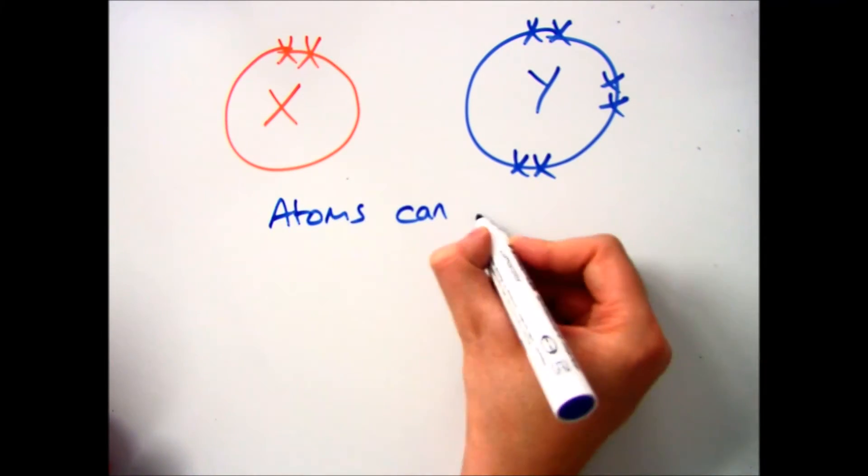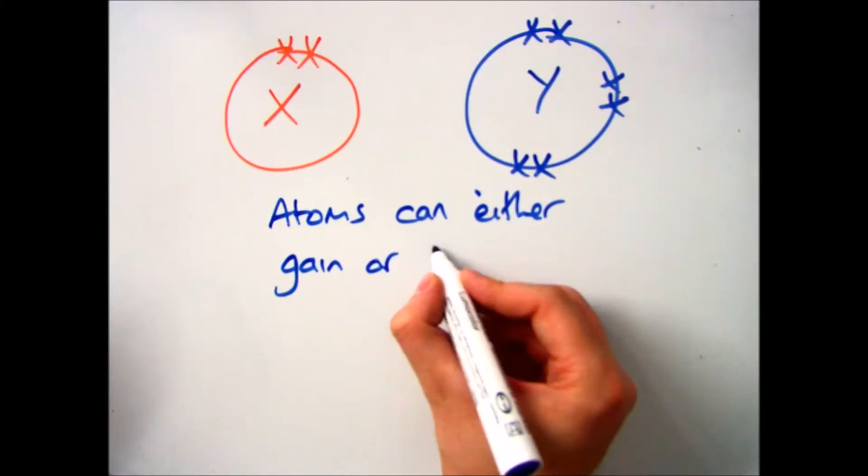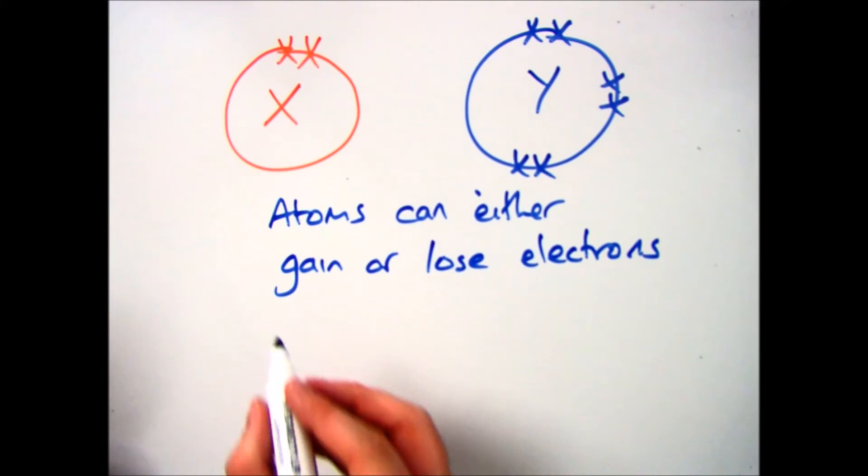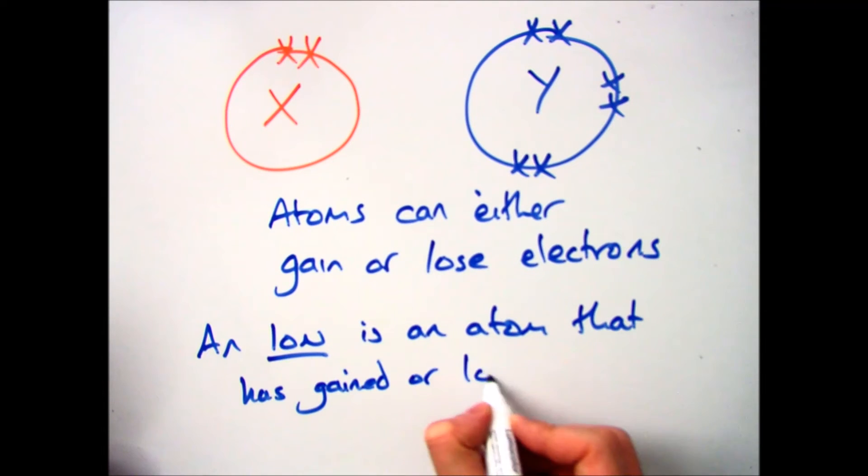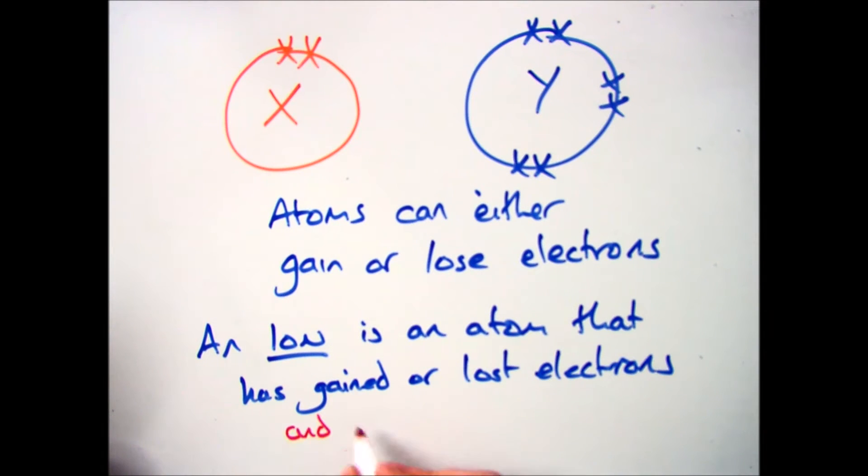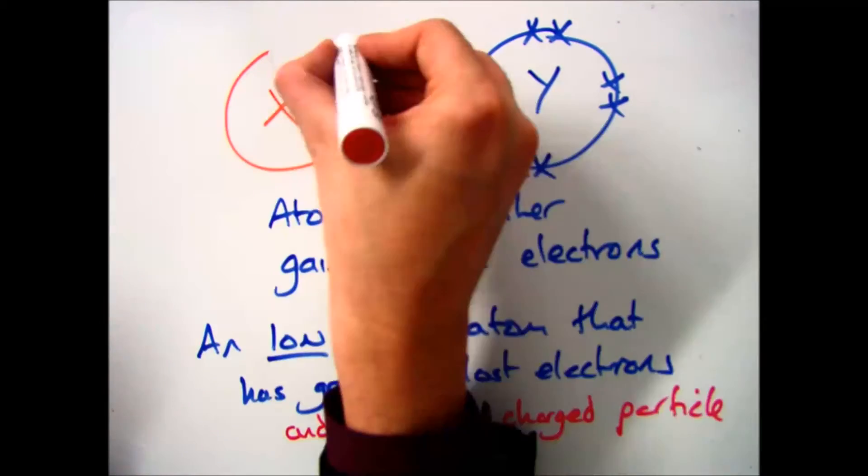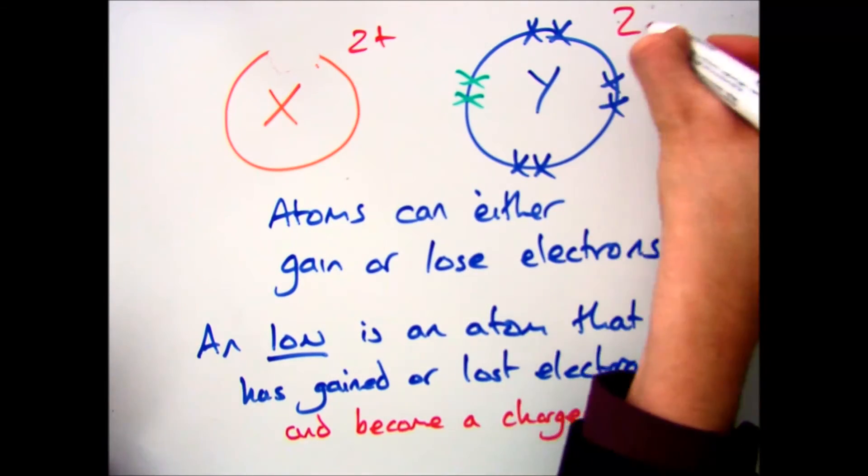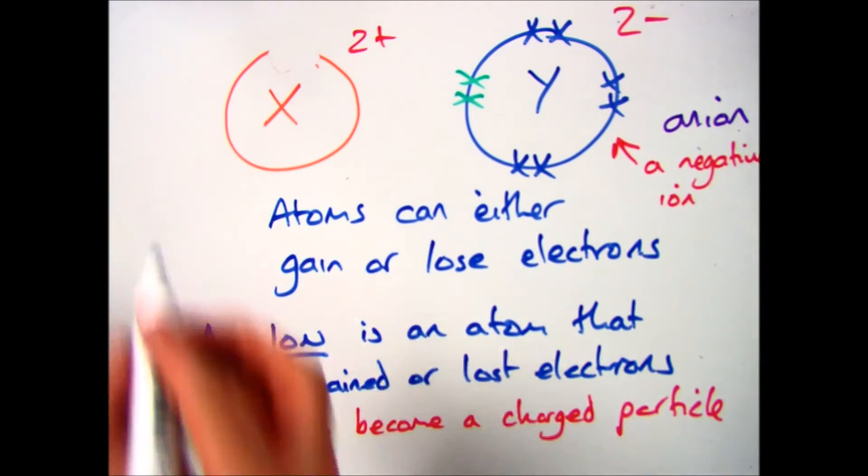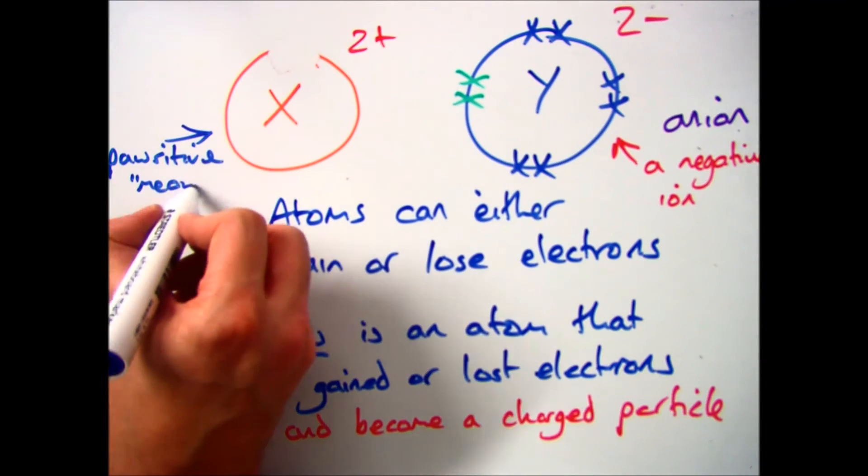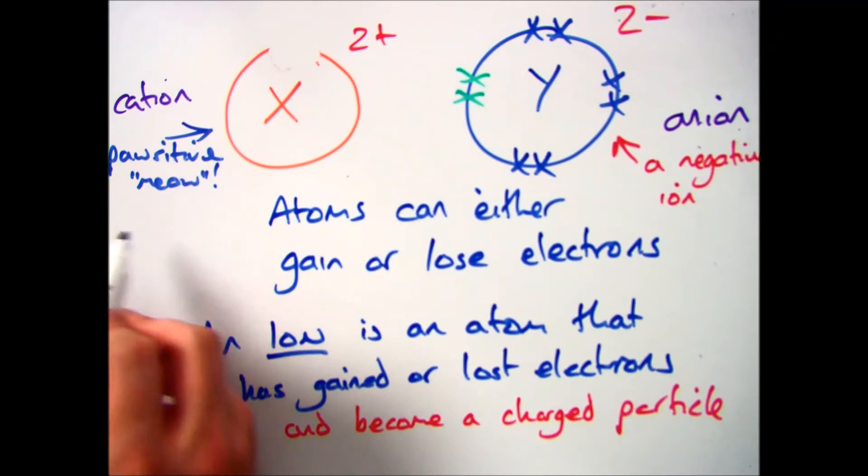So you should remember that all atoms can gain or lose electrons to get a full outer shell. And when that happens you actually get an ion. So the definition of an ion is an atom that has already gained or lost electrons and has become a charged particle, positively or negatively charged depending on which way you want to write it. So you've got your negative ion which is your anion and your positive ion which is your cation.